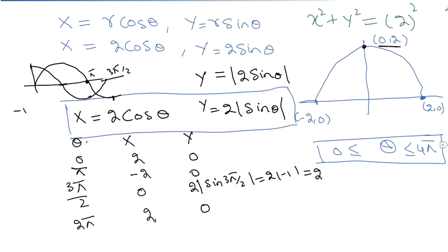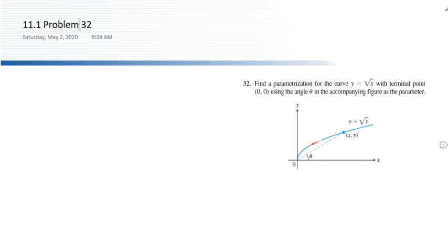Now we move to the last problem, which is an interesting one. We have a curve representing the function y equals square root of x. An angle theta is made with the x-axis. We have to find the parameterization for this curve with the starting point at (0, 0), meaning at t equals 1 we should be at the origin.